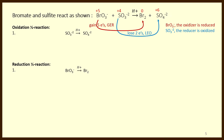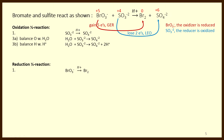So there are two half-reactions: sulfite oxidized to sulfate, and bromate reduced to bromine. Step two says to balance atoms other than hydrogen and oxygen first — in this case, sulfur is already balanced. Step 3a says balance the oxygen by adding water. I count three oxygens on the left and four on the right, so we add one water to the left-hand side. Step 3b says balance the hydrogen by adding H+. I count two hydrogens on the left and none on the right, so we add two H+ to the right-hand side.